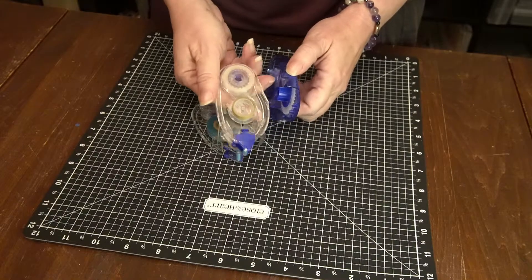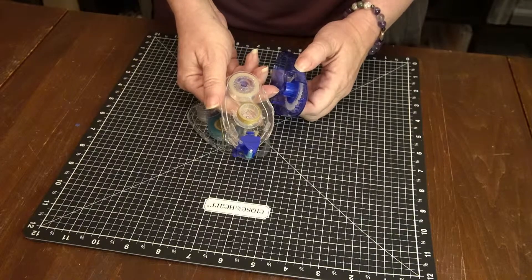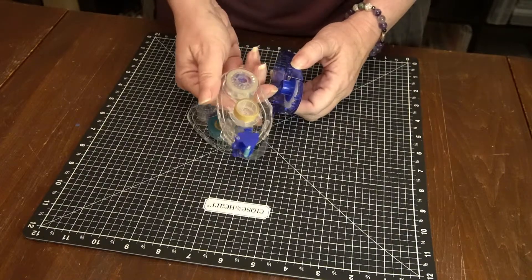Where before we had to wind adhesive around the spool, we're simply going to discard this end.